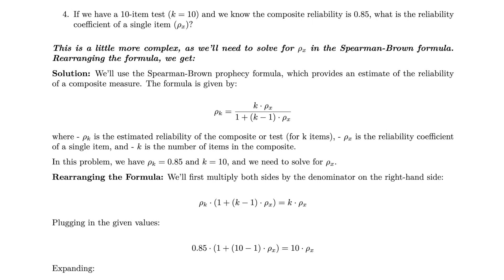First, we need to understand the formula. We're dealing with the Spearman-Brown formula that's given by ρₖ equals k times ρₓ divided by the quantity of 1 plus k minus 1 multiplied by ρₓ. Here, ρₖ is the estimated reliability of the composite, ρₓ is the reliability coefficient of a single item, and k is the number of items in the composite. In our problem, ρₖ is 0.85 and k is 10, so we need to solve for ρₓ.